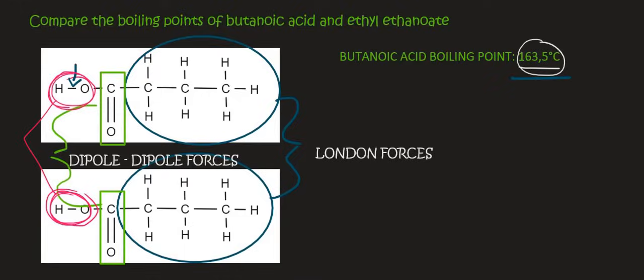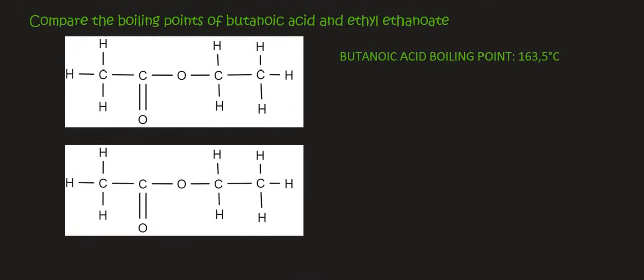Now we will look at ethyl ethanoate. And so now it becomes quite easy, because we know that this section and this section over here would have London forces. Why? Because a carbon-hydrogen section is like an alkane, and so it's non-polar. And when you have non-polar and non-polar, that's London forces.